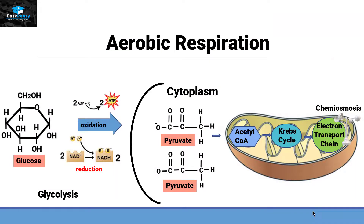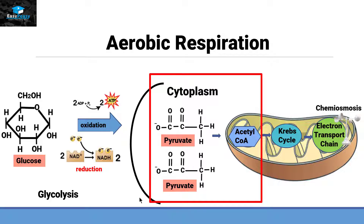Pyruvate oxidation is the second step of aerobic respiration. The first step was glycolysis, in which a 6-carbon compound called glucose converts itself into a 3-carbon compound called pyruvate. Now we have two molecules of pyruvate. The second step is that these molecules of pyruvate will enter the mitochondria of a cell and convert themselves into acetyl-CoA, which will then enter the Krebs cycle.